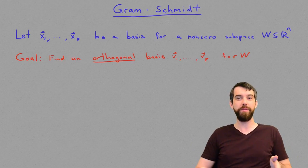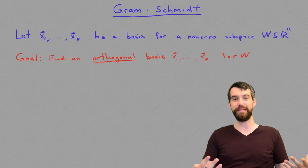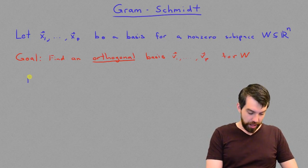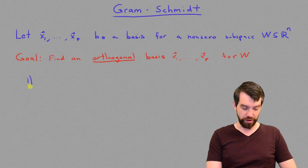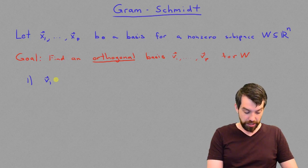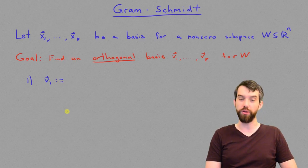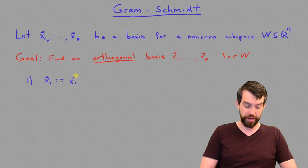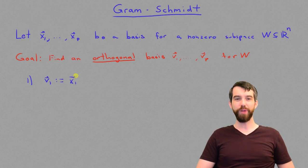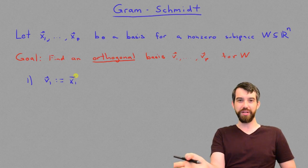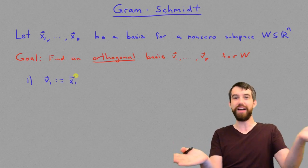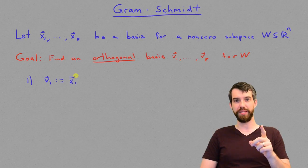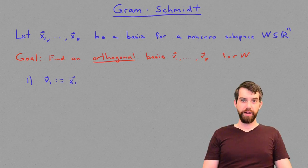The vectors v1 down to vp are related to the original basis vectors x1 down to xp. The method works like this. For the first orthogonal vector, there's going to be no change at all. v1 is defined to be equal to x1. The idea is that if you have only one vector in your subspace, then one vector is clearly going to be an orthogonal basis — there's no other vector to take its dot product with. So one-dimensional subspaces always have an orthogonal basis if you have a non-zero vector.